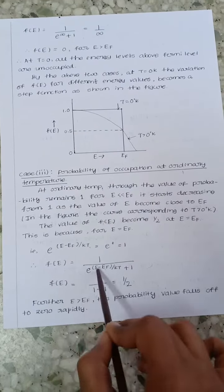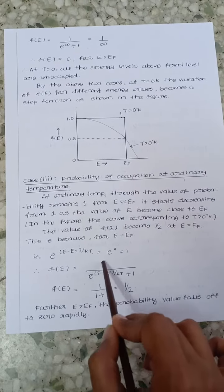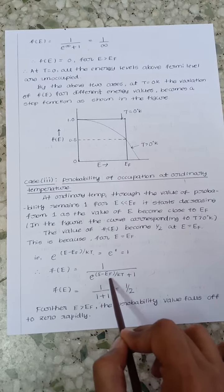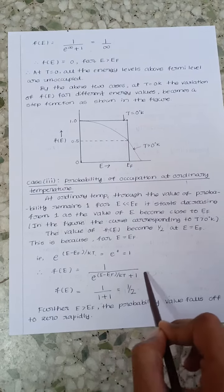So now first consider the equation that is F of E equals 1 by e to the power of E minus EF by KT plus 1.